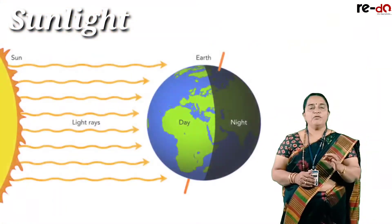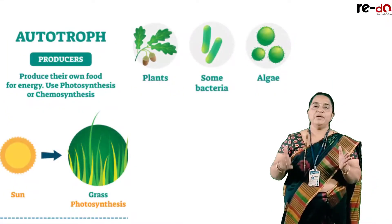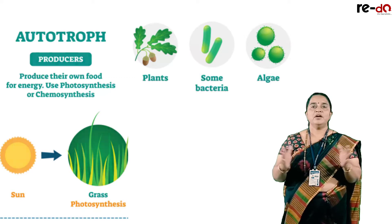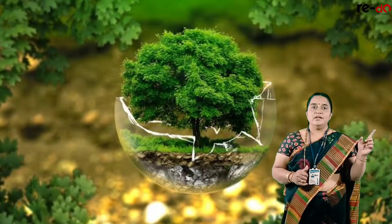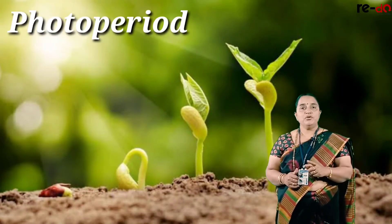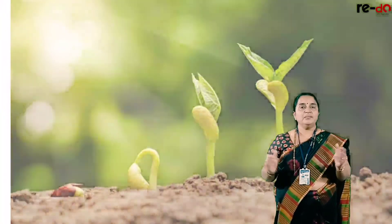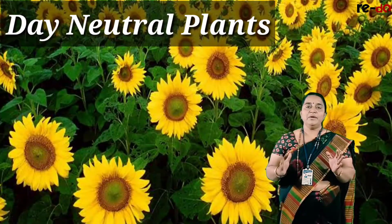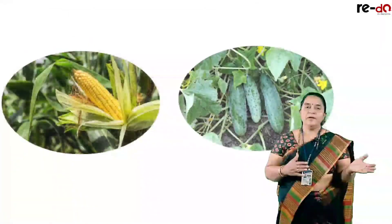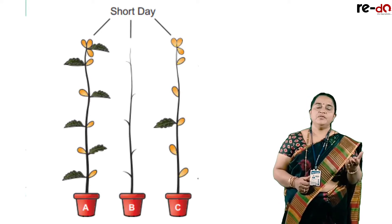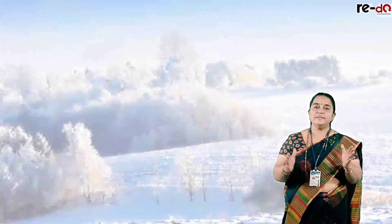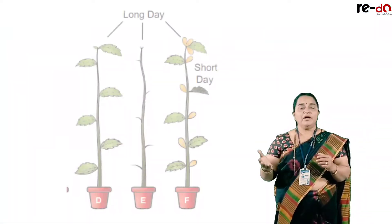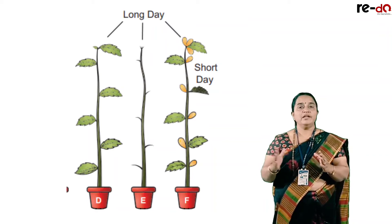Let us begin with sunlight. Light travels in the form of waves and the total light available for autotrophs to prepare food material comprises the productivity in the ecosystem — this we call the photoperiod. Based on the photoperiod, there are three groups of plants: day neutral plants, which are not depending upon the photoperiod and complete both vegetative and reproductive growth; short day plants, which reproduce when sunlight intensity is less, especially in winter; and long day plants, which show reproductive growth when the intensity is maximum.